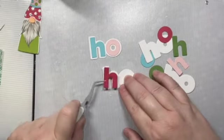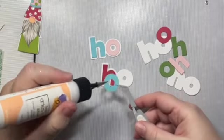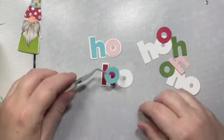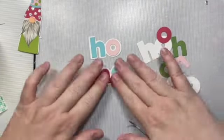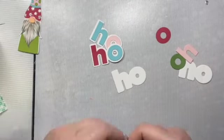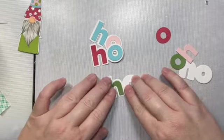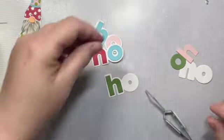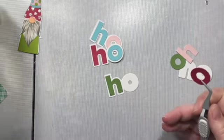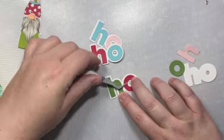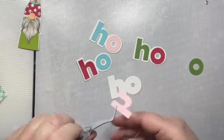So every letter is going to be a different color. You could also do it if you wanted to have each ho be one color. So you could have made this one all red, another all pink, but I just wanted to mix and match just to go along with a theme of this gnome with his crazy colored art deco hat. I just thought that this would match well with the rest of the design.